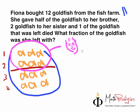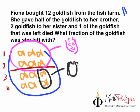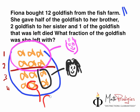Then she gave two goldfish to her sister. So she gave two of the goldfish over here to her sister. She gave half to her brother and two to her sister — sister was very happy. And one goldfish that was left died. So one goldfish over here, the one here, it died. Rest in peace — she's in the grave now. So sad.